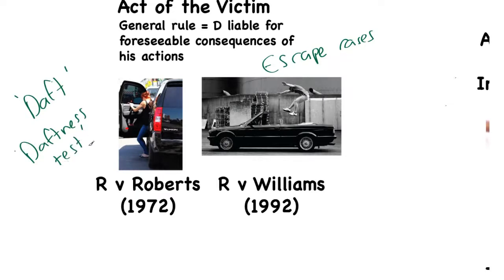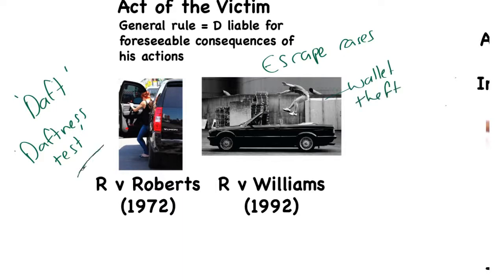The legal principle of Roberts is effectively the daftness test: did the victim do something so daft that the defendant could not have foreseen it? In this instance, the court said no — it was quite reasonable that if you try to sexually molest a woman in a car, it is obvious she is going to think she is in danger and likely to try to escape. Therefore in R v Roberts, Roberts is still liable. Contrast this with Williams, where the victim jumped out of a moving car because he alleged there had been an attempt to steal his wallet.